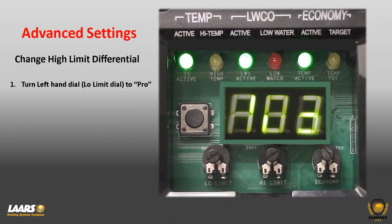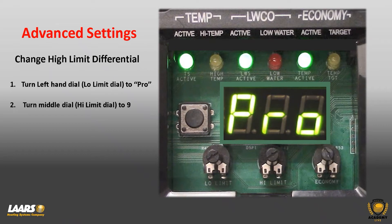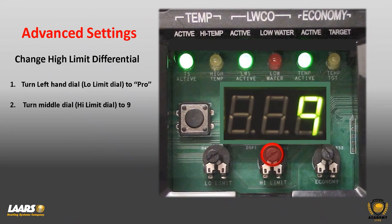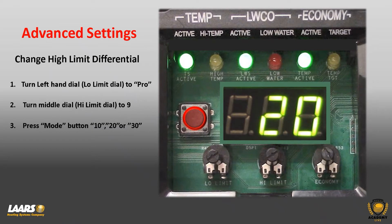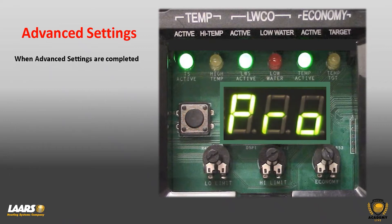To change the high limit differential — defaulted at 30 degrees — start in PRO for programming. Turn the middle dial until you see the number nine. Press the mode button once and it will show the defaulted setting of 30 degrees. Press it a second time and you'll see 10 degrees; press it again for 20 degrees. There are three options: 10, 20, or the default of 30. Scroll through until you find your value and be patient — it will revert back to PRO for programming.